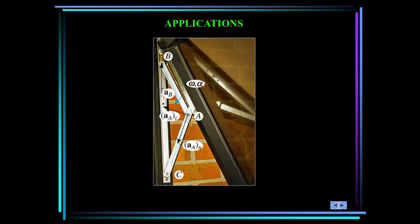In this mechanism for a window, link AC rotates about a fixed point C, and AB undergoes general planar motion. Point A is moving in a circle about C, and point B is sliding in the track, so link AB undergoes translation and rotation. How can we determine the accelerations of the links in the mechanism?